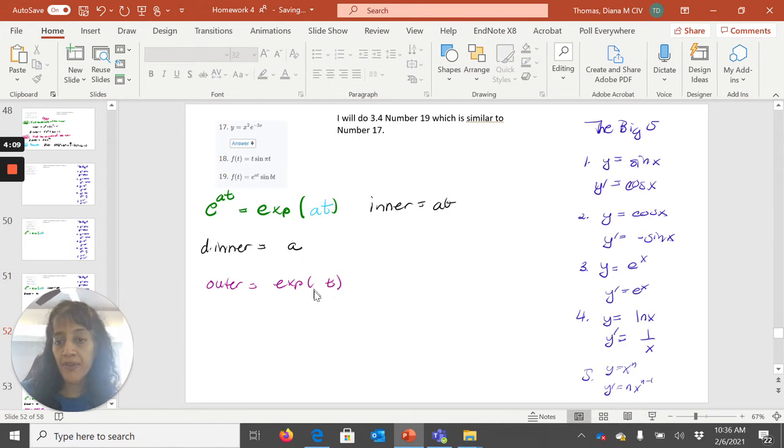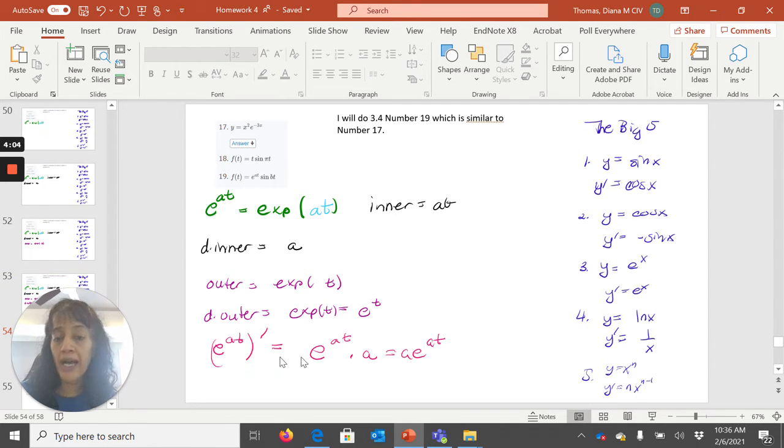The derivative of the outer is just the same thing. So the derivative of the whole guy is the derivative of the outer function with the inner plugged in for t times the derivative of the inner function. All the rule applies, so you're just applying rules.